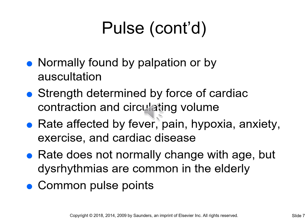Many things can impact a person's pulse rate, including infection, fever, pain, hypoxia, anxiety, exercise, and cardiac diseases. Just because a person gets older does not necessarily mean their pulse rate will change. However, many older adults may have different cardiac diseases or cardiac issues that can cause dysrhythmias, which is why they may have an altered pulse rate.